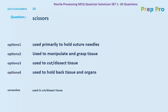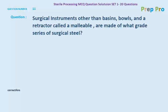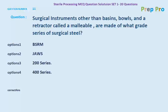Question number eleven: surgical instruments other than basins, bowls, and a retractor called malleable are made of what grade series of surgical steel? The options are BSRM, GAWS, 200 series, and 400 series. The correct answer is 400 series.